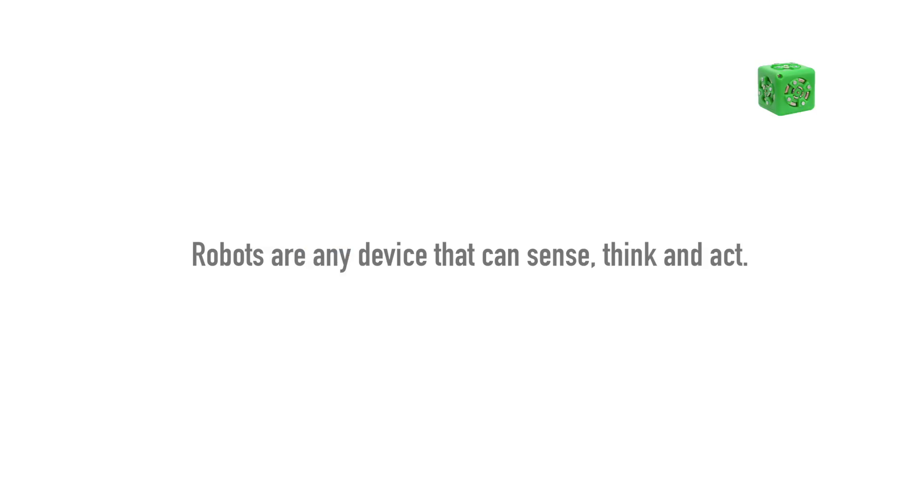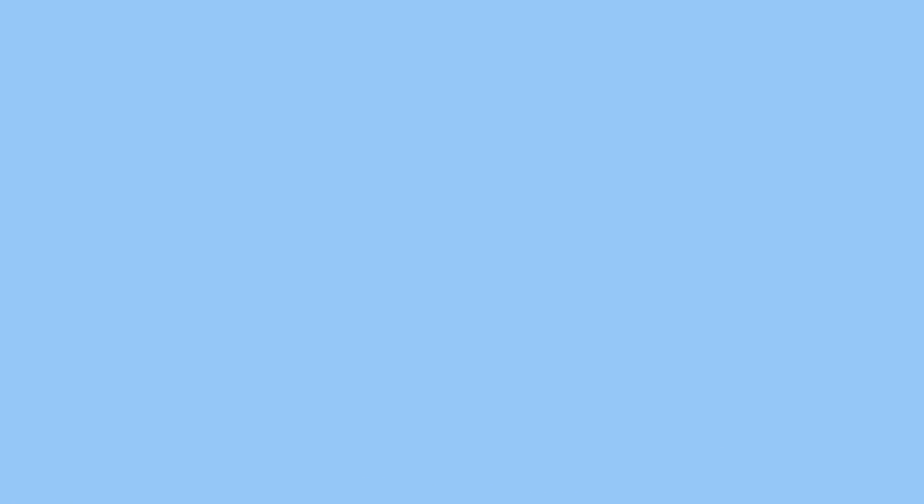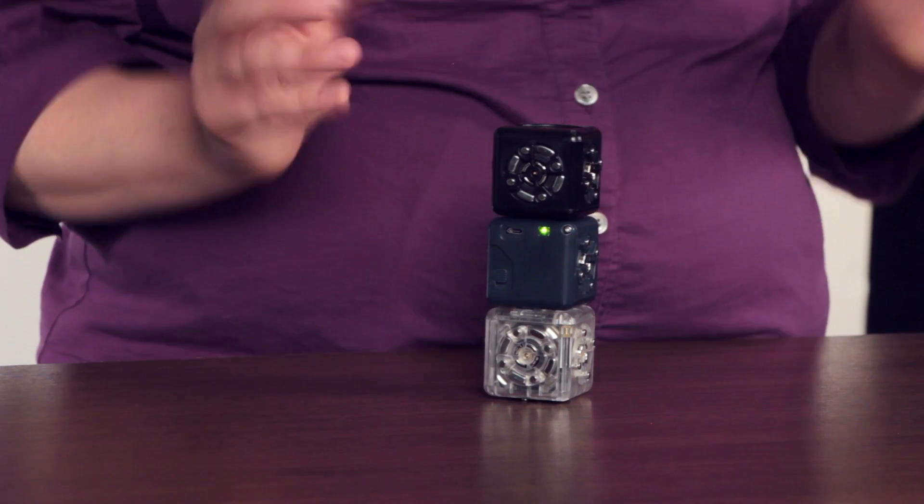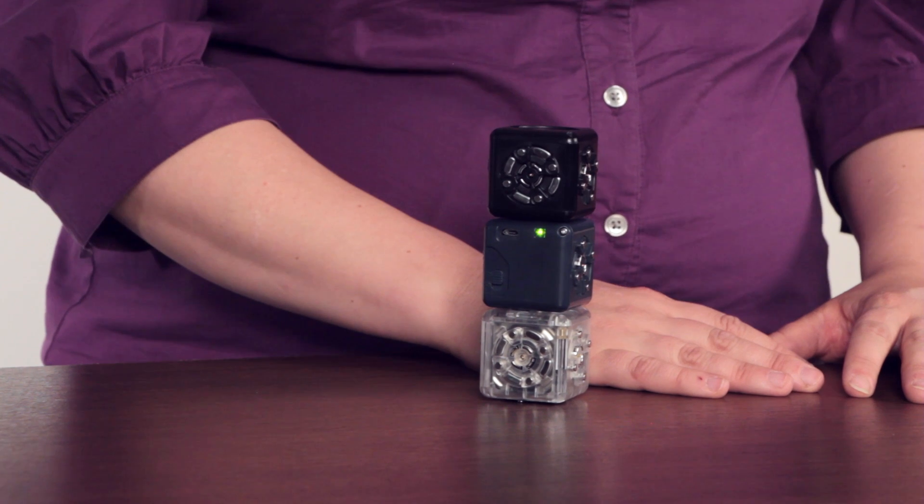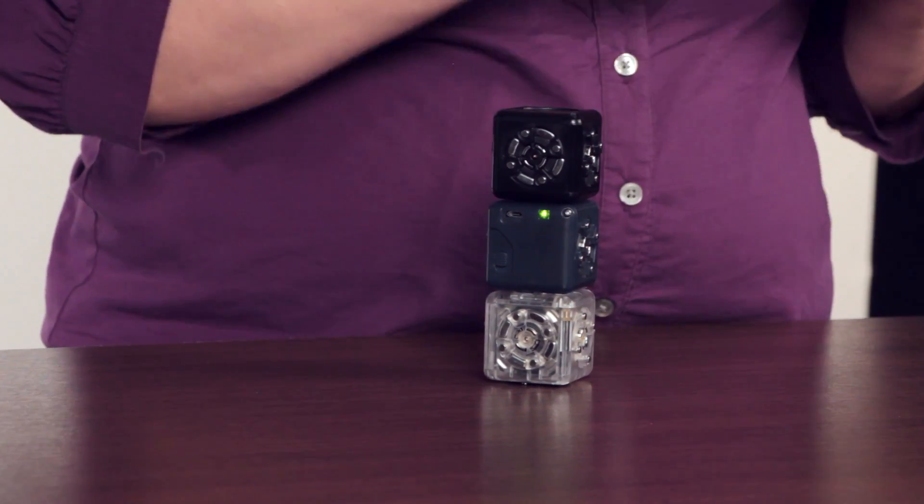It's important to understand what makes robots special and different from other machines. Our very best, simplest definition is that robots are special devices that can sense, think, and then act. Cubelets are a great way to start teaching with robots, because the three types of Cubelets match the definition of sense, think, and act of a robot.